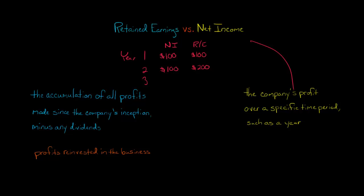In year three, the company again has net income of $100, but this time there are dividends of $25 paid out. So the retained earnings at the end of year three is $275.